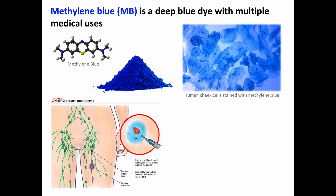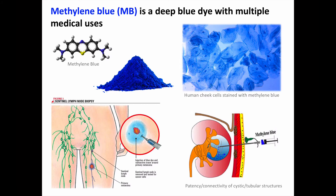The idea is to inject methylene blue near a tumor, and then when the surgeon dissects out the regional lymph nodes, they can see which one receives lymphatic input from the tumor because it has dyed blue, so that node can be removed and inspected to see if the tumor is spreading through the lymphatic system. Similarly, you can assess the patency and connectivity of various cystic and tubular structures by injecting methylene blue in one area — in this example a renal cyst — and seeing where the dye flows to.